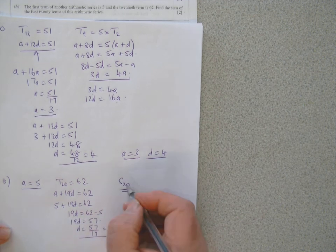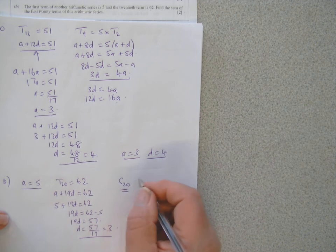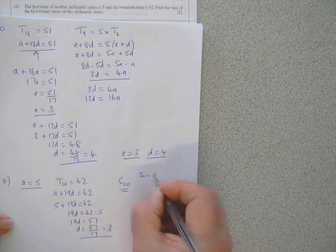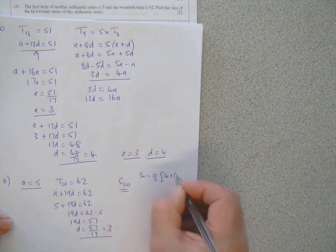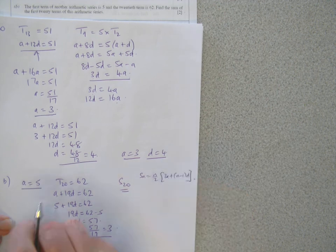So A is 5, D is 3. Now S20, the sum formula, SN is N over 2, 2A plus N minus 1D.